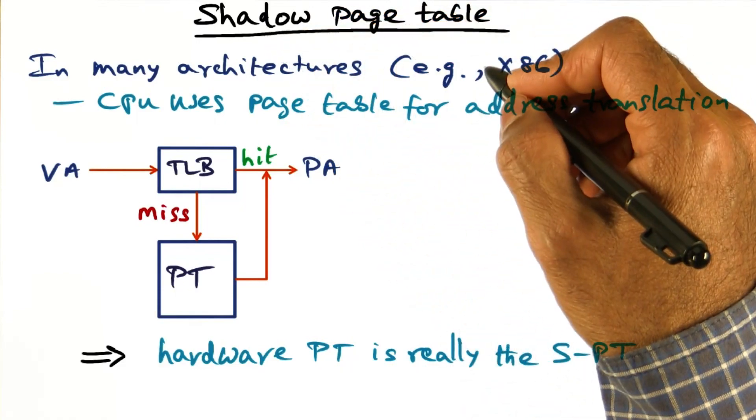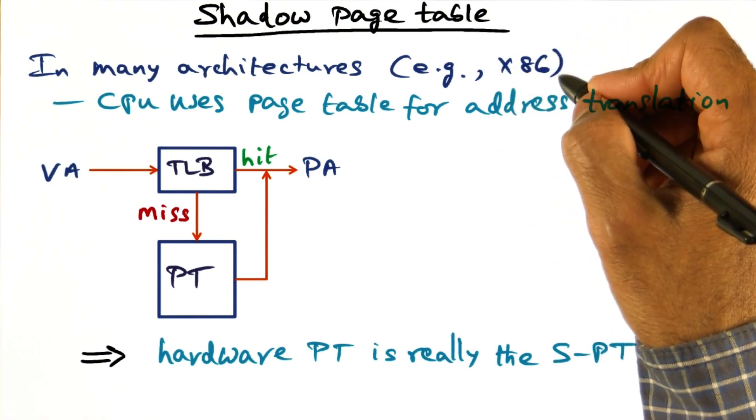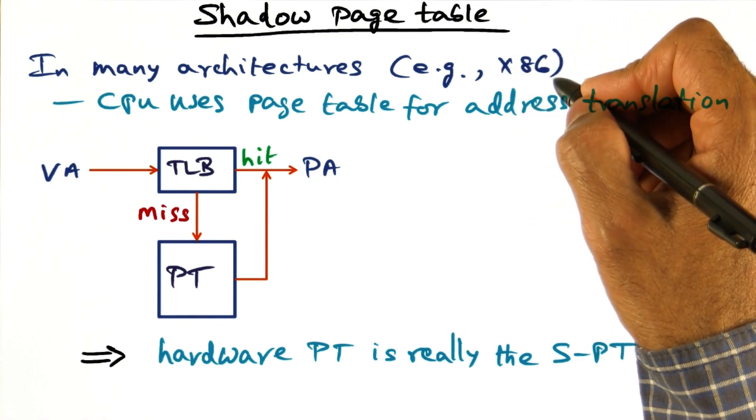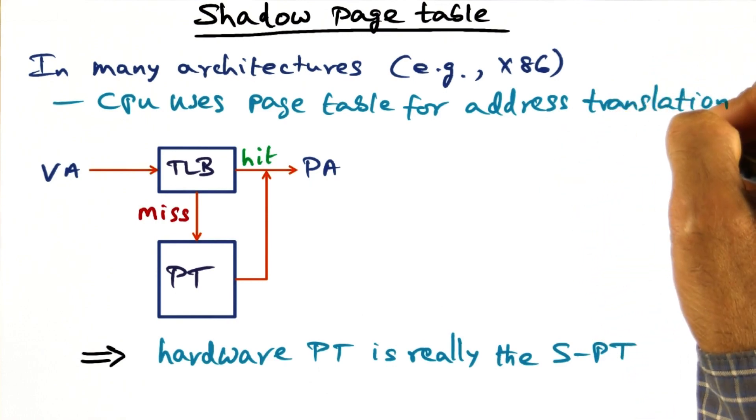Let's understand what exactly is the shadow page table and where it is. In many architectures, for example, Intel's x86 family, the CPU uses the page table for address translation.